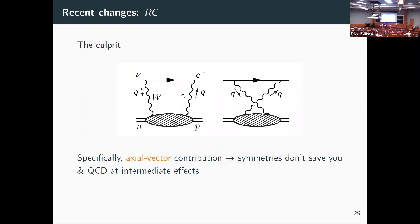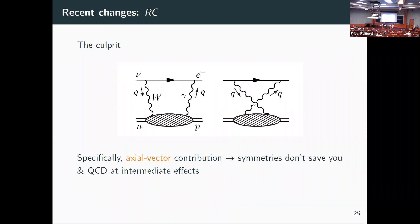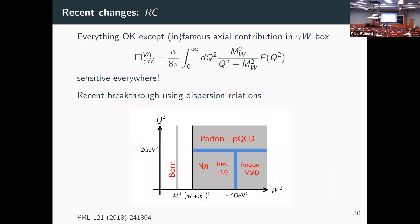The gamma-W box is complicated because you can't rely on symmetries to calculate it, meaning you have to do a lot of hard work to get all the strong interaction physics in that blob. That's what people have been working on for the past 50 years — getting all the strong interaction physics present when the neutron goes to a proton in this loop.